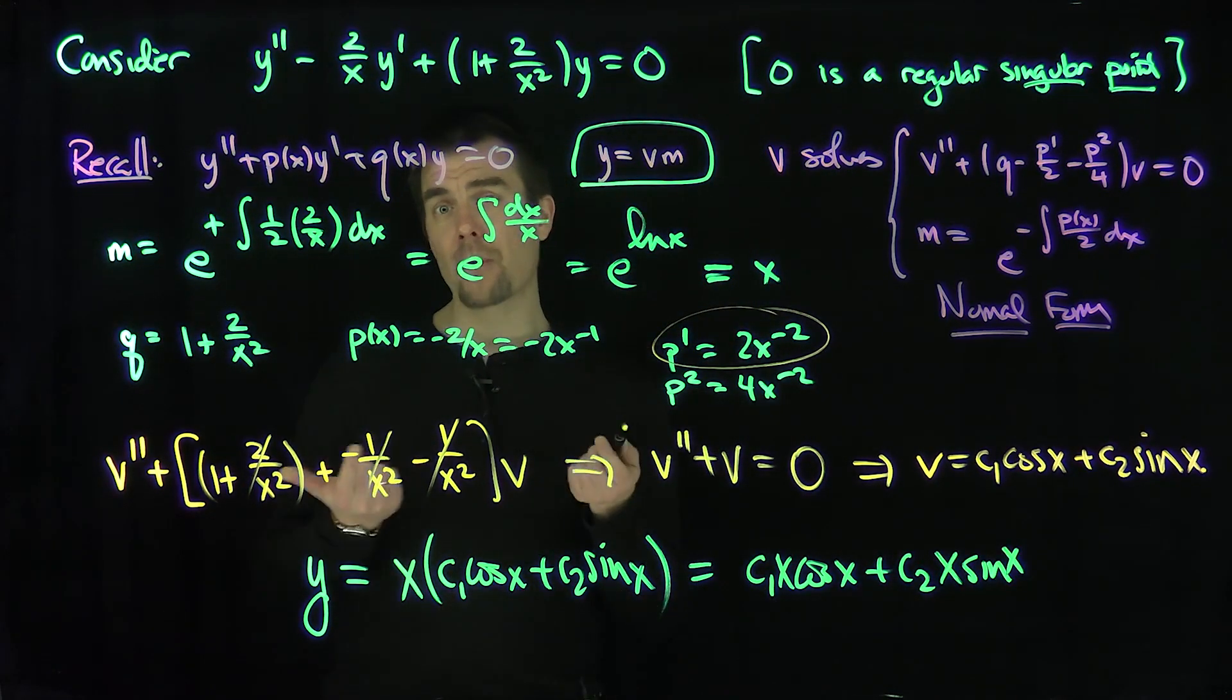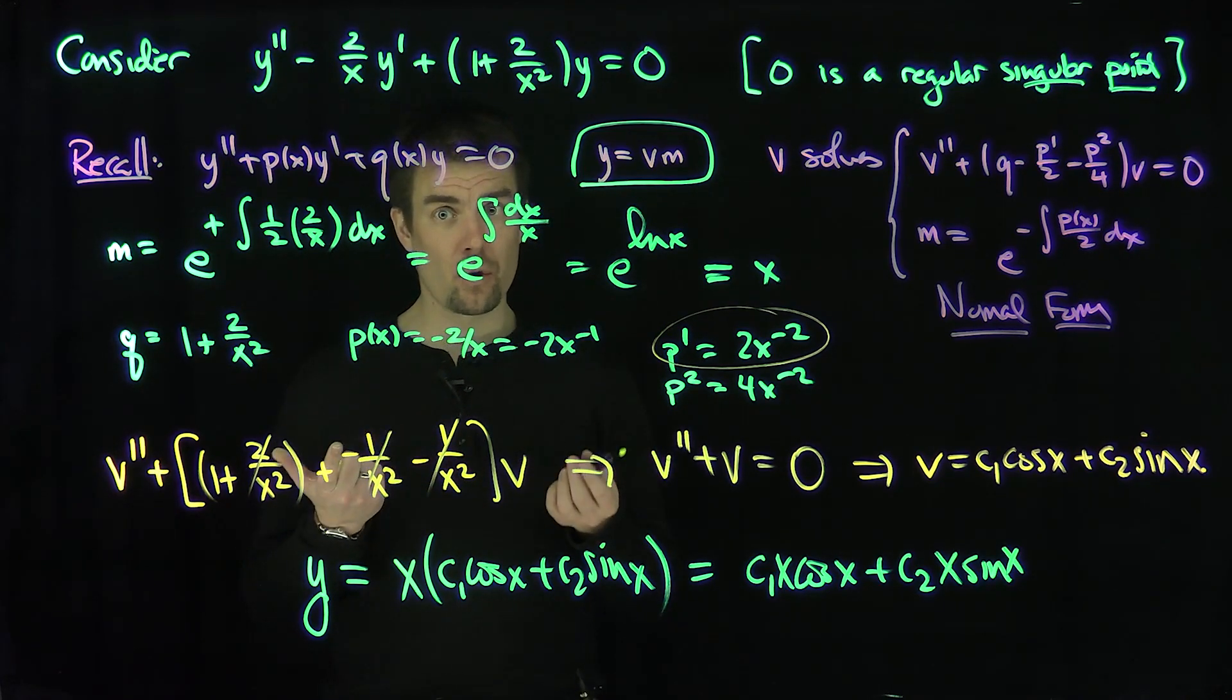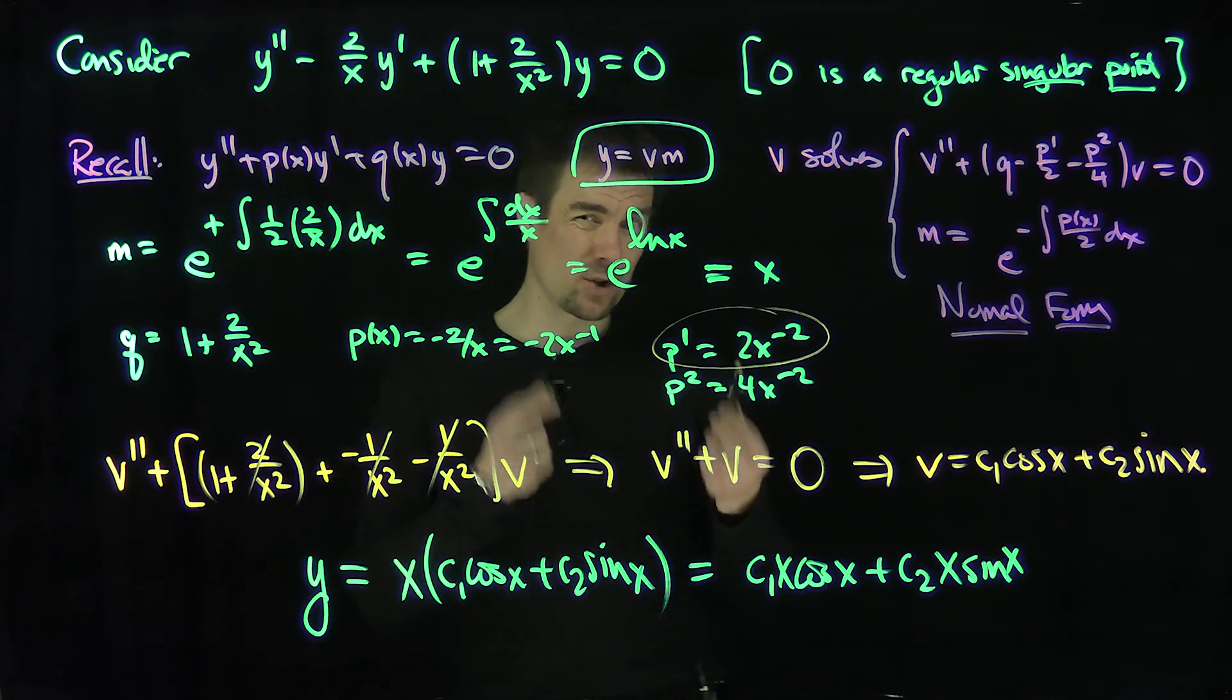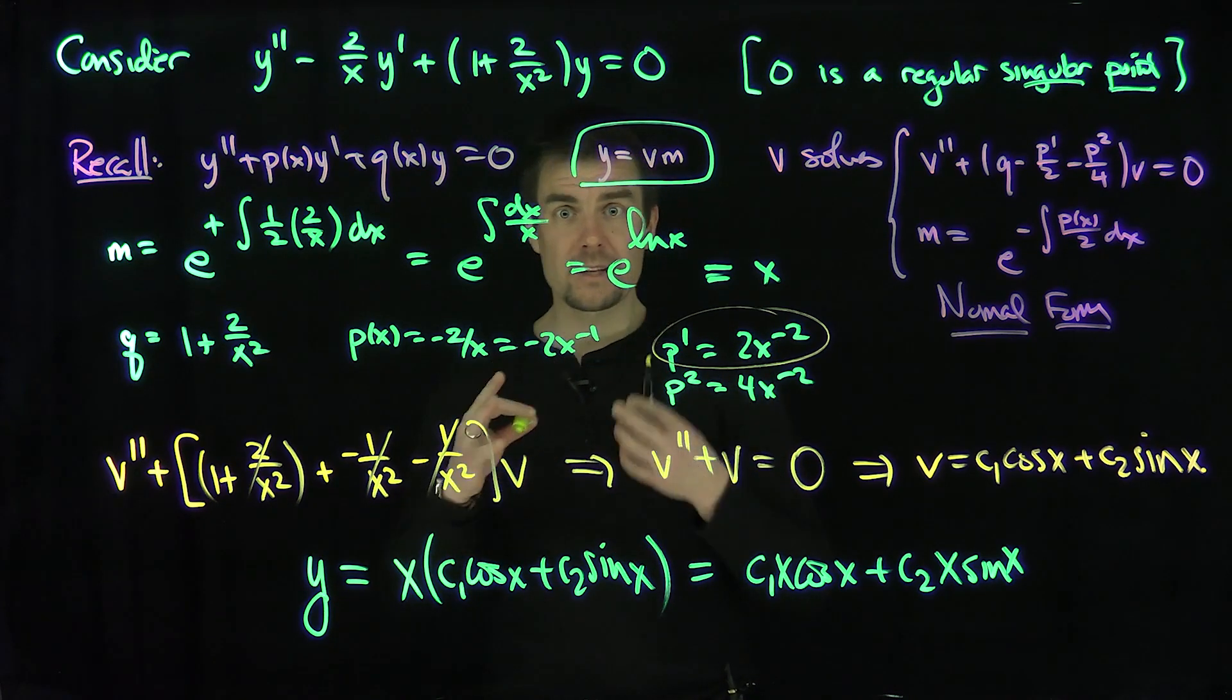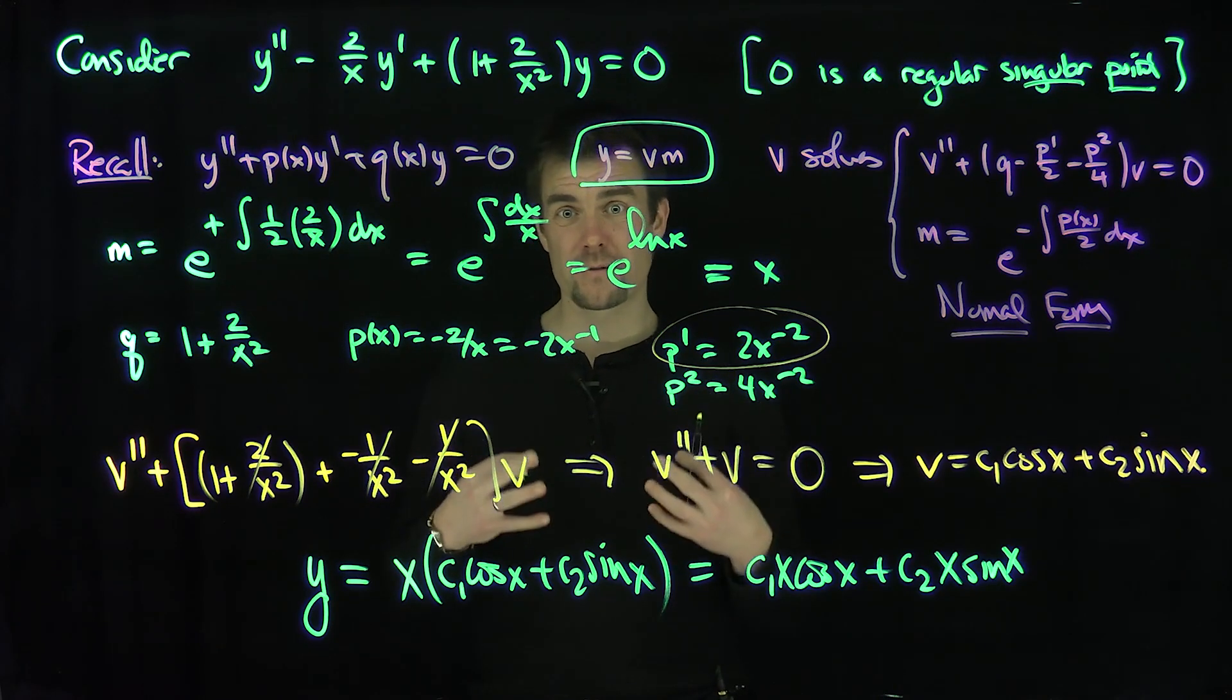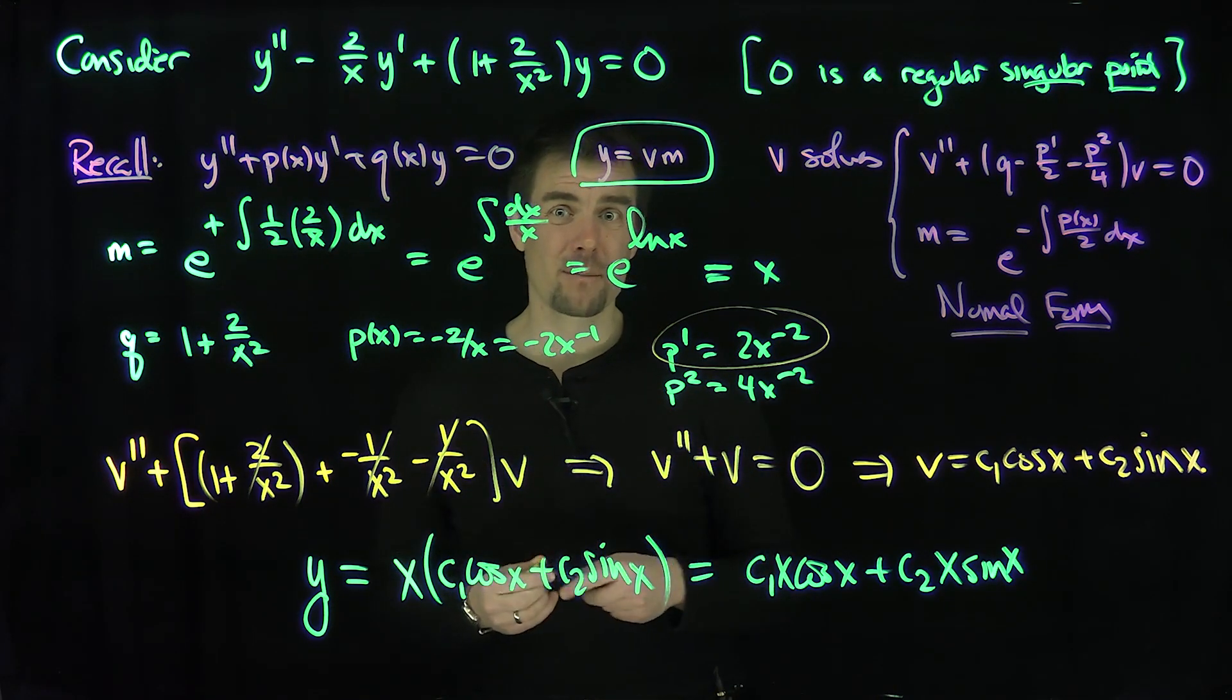I encourage you to do this with the power series method, with the method of Frobenius, and to find what the solutions to the indicial equation are. Putting a problem into normal form gives you good properties and makes the power series approximations easier to handle. So I always like to check this first to get a good sense of what the power series solutions are going to look like. Thank you very much.